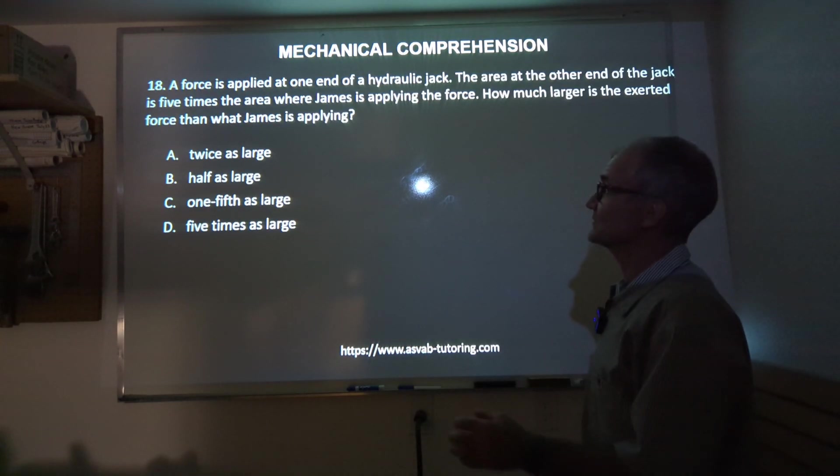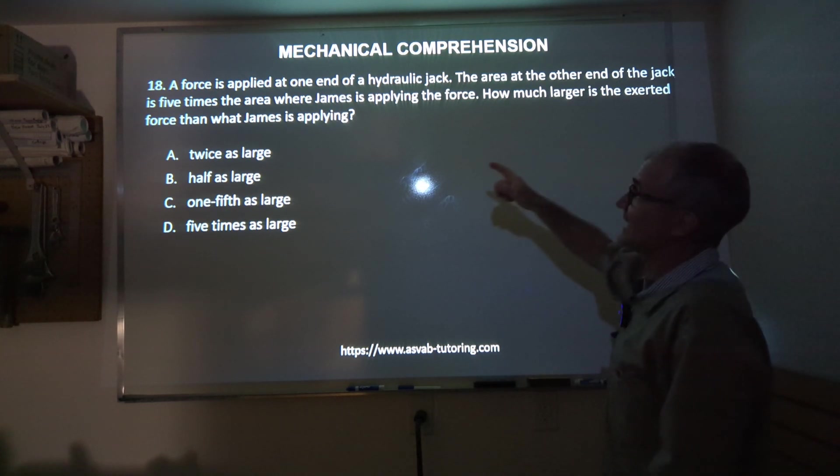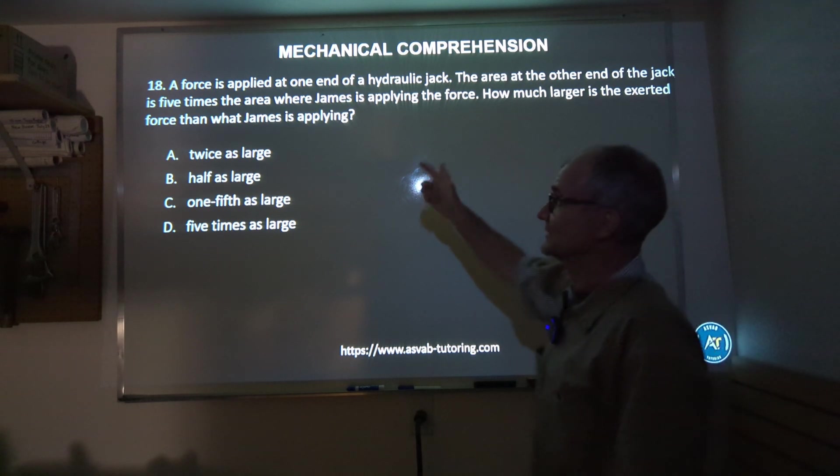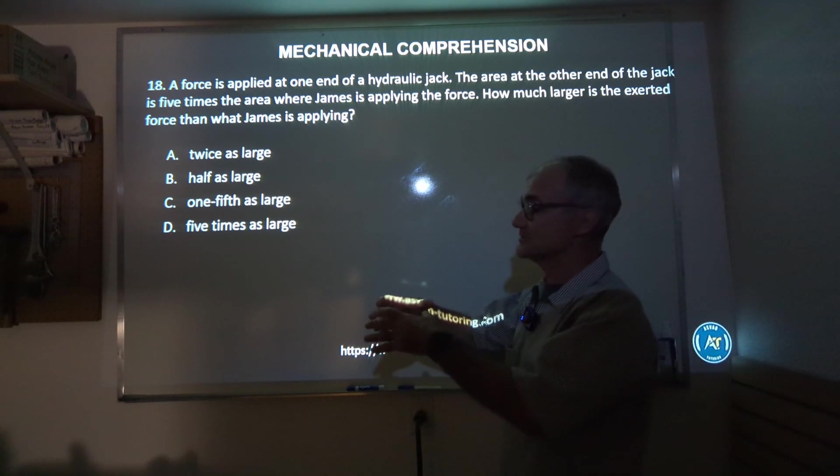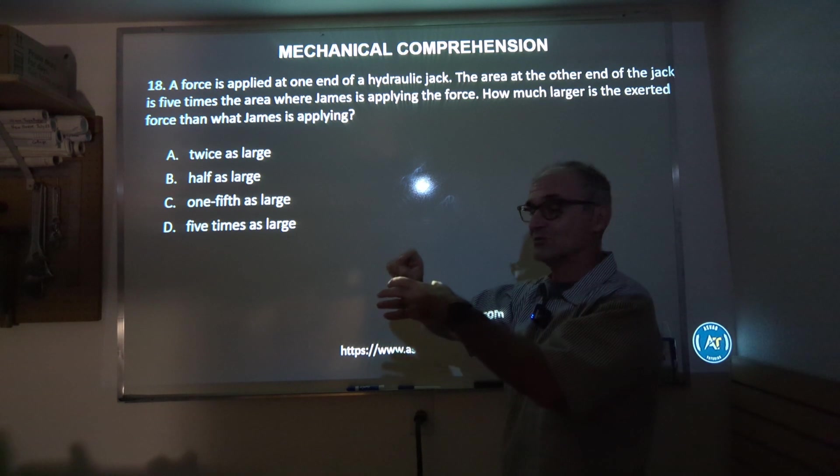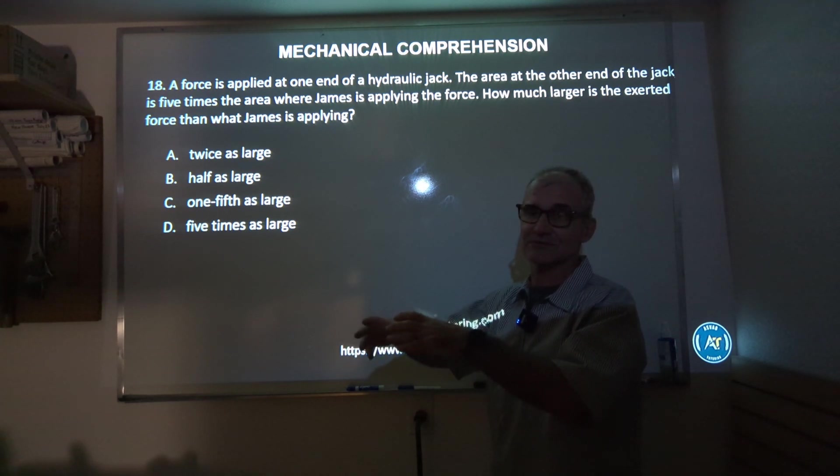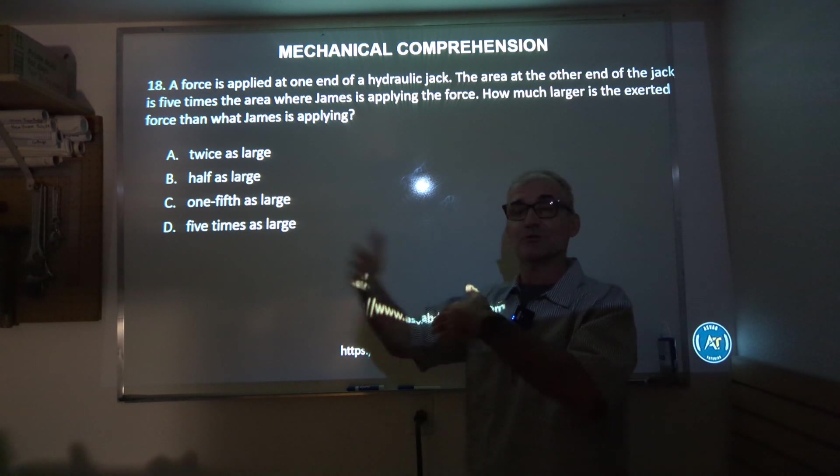Number 18: a force is applied at one end of a hydraulic jack. The area at the other end of the jack is five times the area where James is applying the force. How much larger is the exerted force than what he's applying? So the area is five times larger, meaning that piston will travel one-fifth the distance. So it's traveling a fifth the distance, so it'll be five times more powerful.